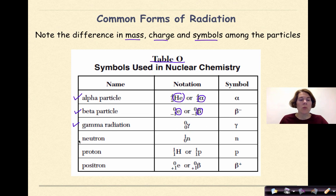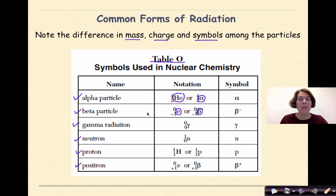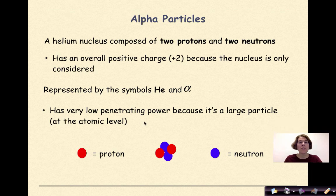We've also talked in the past about neutrons and protons, and finally positrons, which look very similar to a beta particle. The key thing to remember is that you have table O to use, so make sure that you use it.